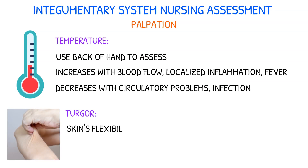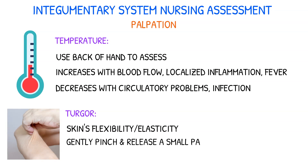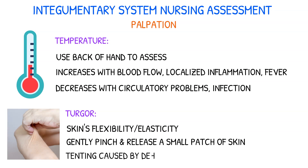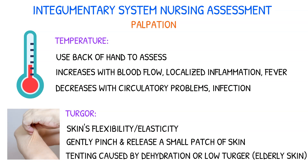Turgor refers to the skin's elasticity. To test turgor, gently pinch and release a small patch of skin. As the skin is freed, it instantly returns to its previous place due to its high turgor. Tenting can occur in dehydrated or elderly people with low turgor.